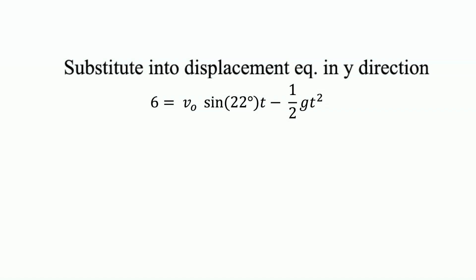The displacement equation in the y direction will be 6 equals v-naught sine 22 times t minus 1-half gt squared. Substituting my value for v-naught t gives me 6 equals sine 22 times 15 divided by cosine 22 minus 1-half gt squared.